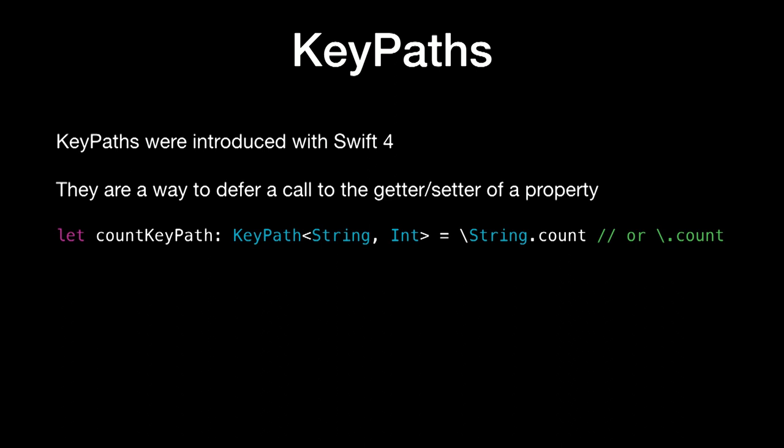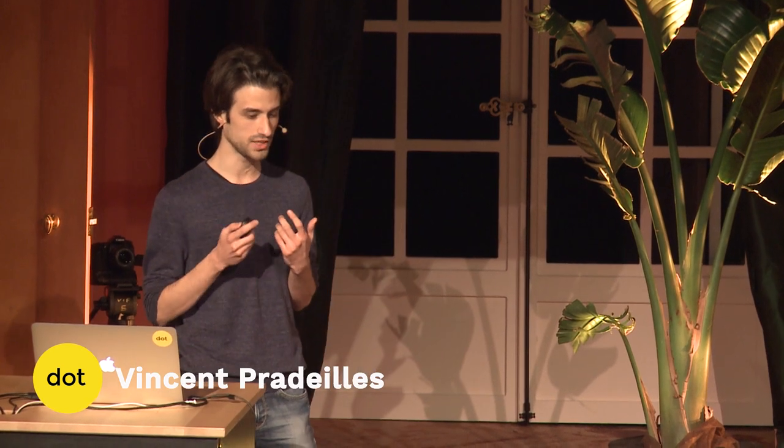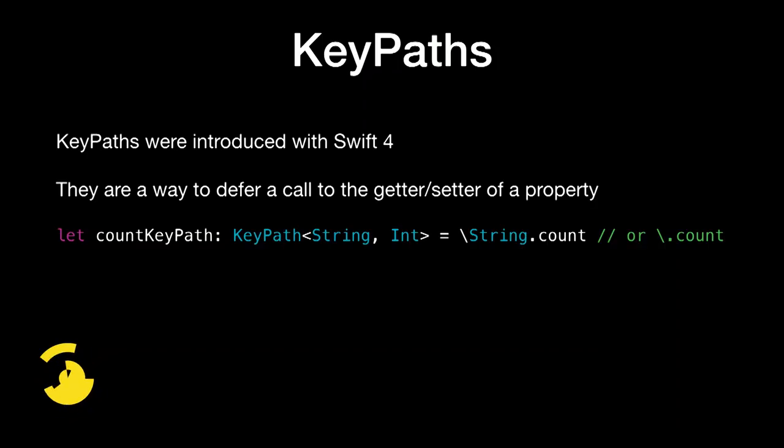So what does it look like in code? KeyPath is a generic type with two generic parameters. The first one is the type on which you will invoke the KeyPath. The second one is the type of the property you want to get or set. To get a literal KeyPath, you use the syntax backslash, name of the type, dot, name of the property — or in places where the type can be inferred, just backslash dot name of the property.